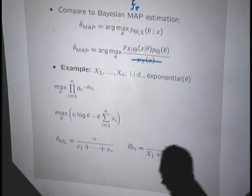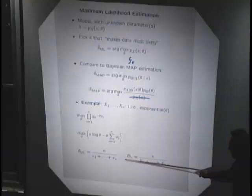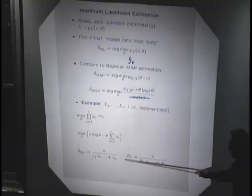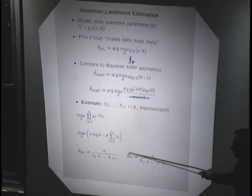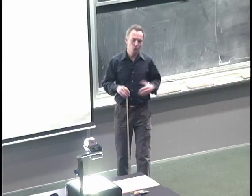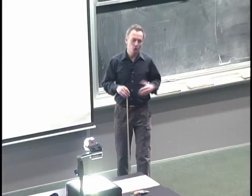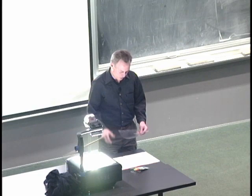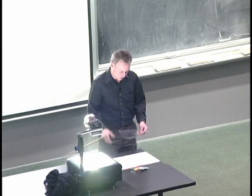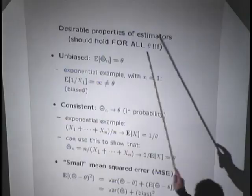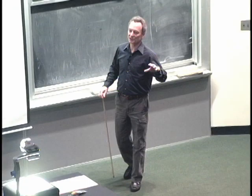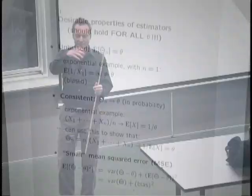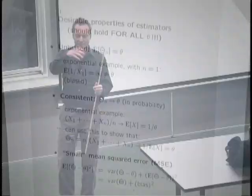So what can we tell about our estimate — is it good or bad? We should look at this random variable and talk about its statistical properties. What we would like is for this random variable to be close to the true value of theta with high probability, no matter what theta is, since we don't know what theta is. Let's make more specific the properties that we want.